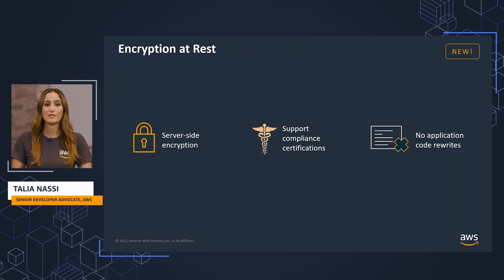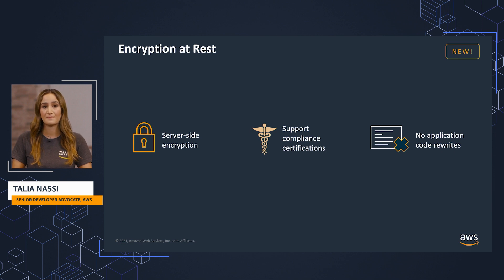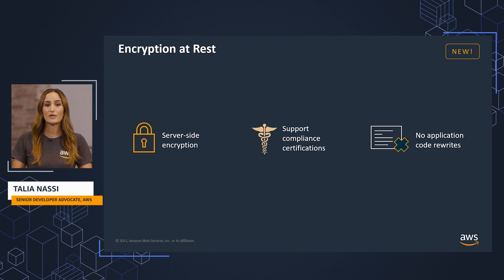All user data stored in Amazon DynamoDB is fully encrypted at rest. DynamoDB encryption at rest provides enhanced security by encrypting all of your data at rest using encryption keys stored in AWS Key Management Service, or AWS KMS. This functionality helps reduce the operational burden and complexity involved in protecting sensitive data. With encryption at rest, you can build security-sensitive applications that meet strict encryption compliance and regulatory requirements.